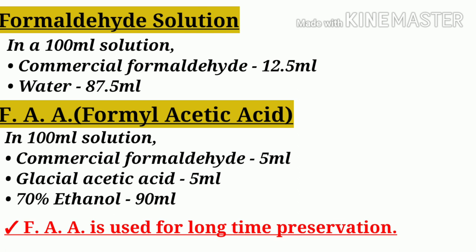Formal acetic acid (FAA) is prepared by combining commercial formalin 5 ml, glacial acetic acid 35 ml, and ethanol 90 ml together. It is noted that formal acetic acid is used for long-term preservation.